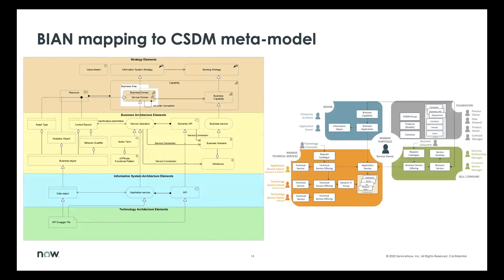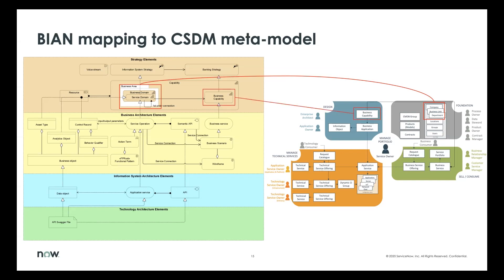This is the BIYN model on the left, and the CSDM model on the right. You'll see four different areas of BIYN, which are very well aligned with TOGAF — a common enterprise architecture framework. The first area we highlight is the business area, where we have business domain and service domain. That largely aligns with the foundation domains of company, business unit, and department. When you look at the strategy layer, that's what the business is doing, how things are working and structured from a business point of view. There's a pretty much one-to-one capability-based planning mapping here — business capabilities map to our business capabilities, and the definition is well aligned.